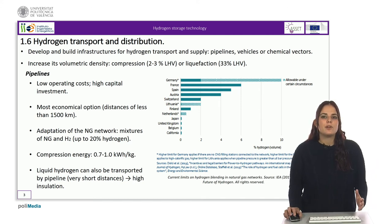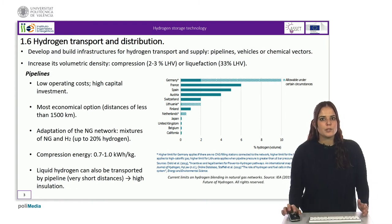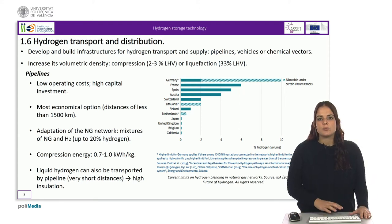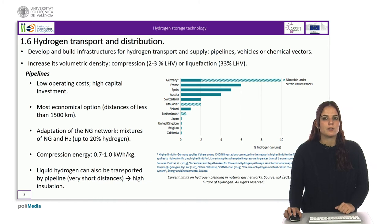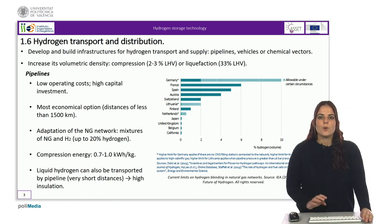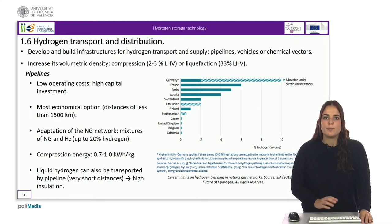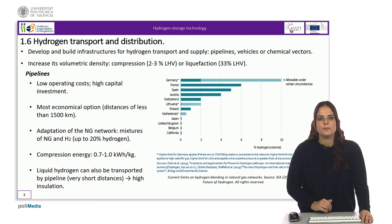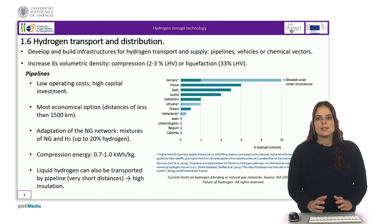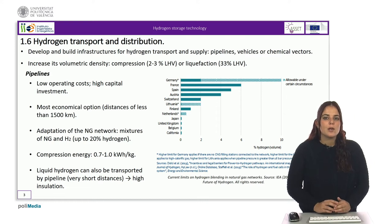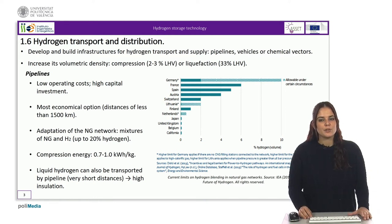As we have mentioned before, hydrogen is a gas with a low volumetric density at standard temperatures and pressures. For this reason, it is convenient to increase its volumetric density when it is transported and distributed. The two most common forms are compression and liquefaction, and both processes require energy. The energy required for compression is equivalent to about 2–3% of the lower calorific value of hydrogen. On the other hand, the liquefaction process needs about 11 kWh per kilogram, which is equivalent to 33% of the energy contained in hydrogen. However, high-pressure hydrogen storage tanks are usually more expensive than liquid hydrogen tanks.